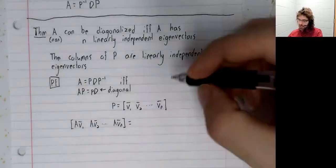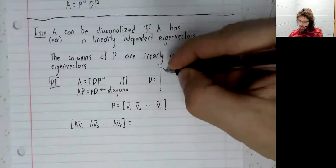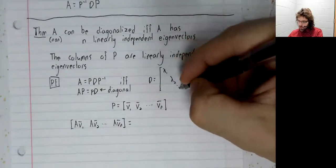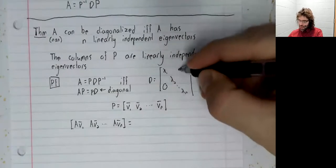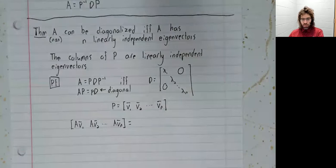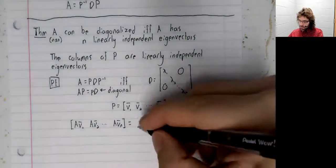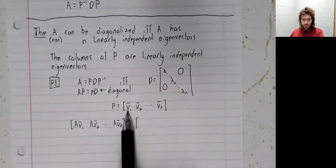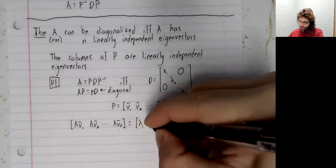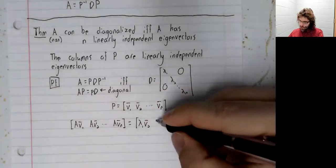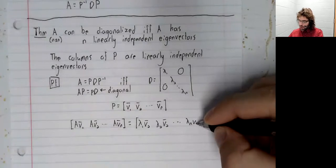What about P D? Well, this isn't a theorem you need to have memorized or anything. But when you multiply a matrix by a diagonal matrix, the product turns out to be quite simple. So, P times D is the first column of P times the first diagonal element of D, and so on down the line.